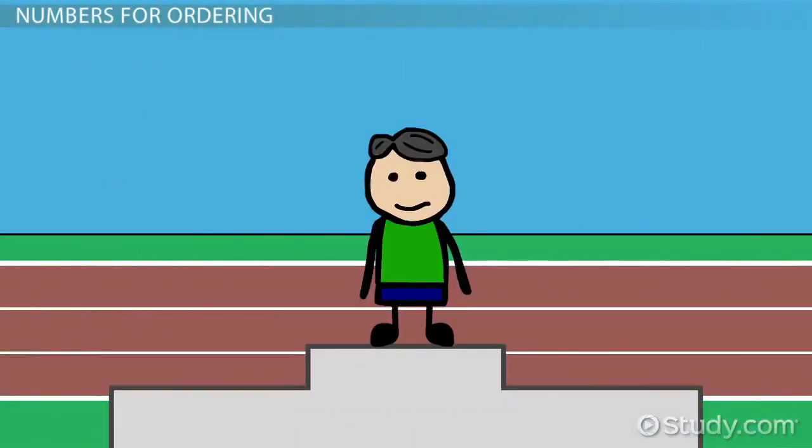If Bob won the race, we'd say that he finished the race first. This ordinal number corresponds with the cardinal number 1.